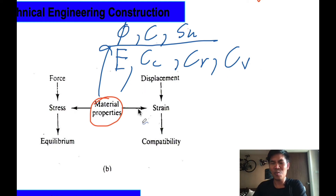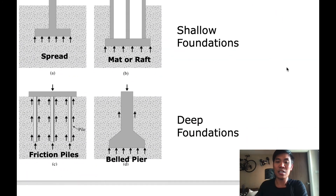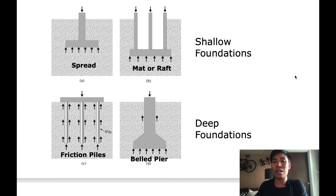If you forget about these parameters, go back to soil mechanics, because we have to use these numbers. The type of foundation can be classified into two types: the first is shallow foundation, and the second is deep foundation. The difference is not simply shallow or deep — it depends on the soil resistance.